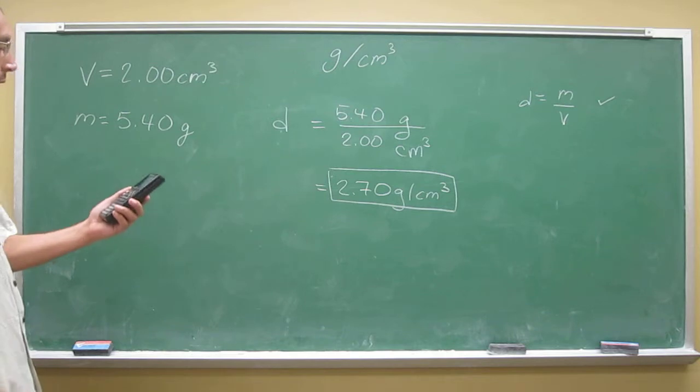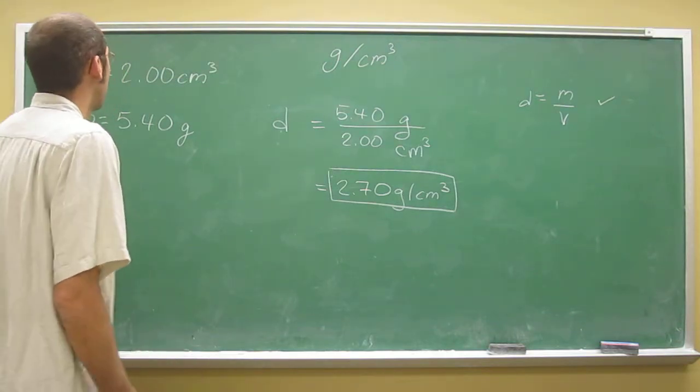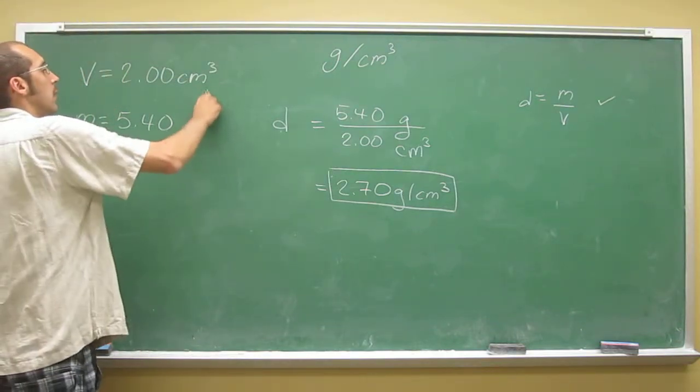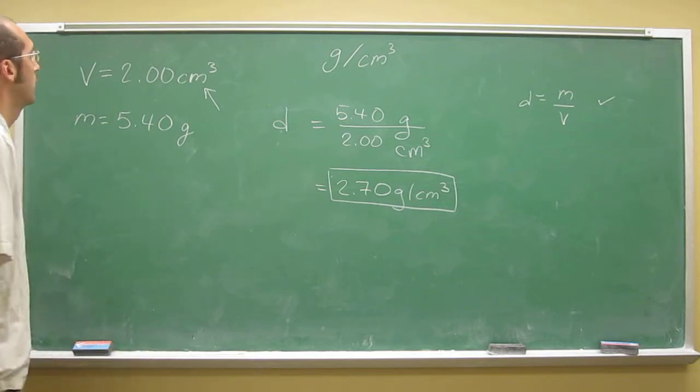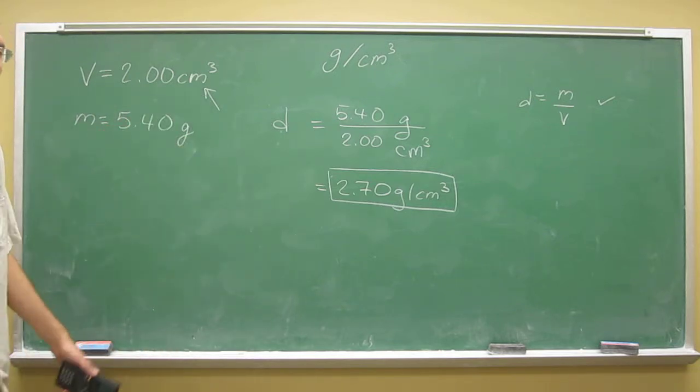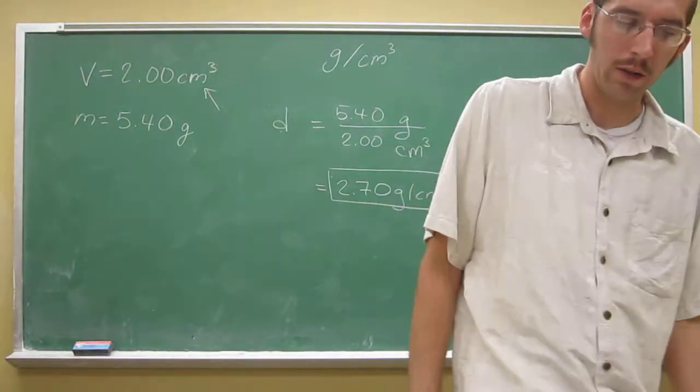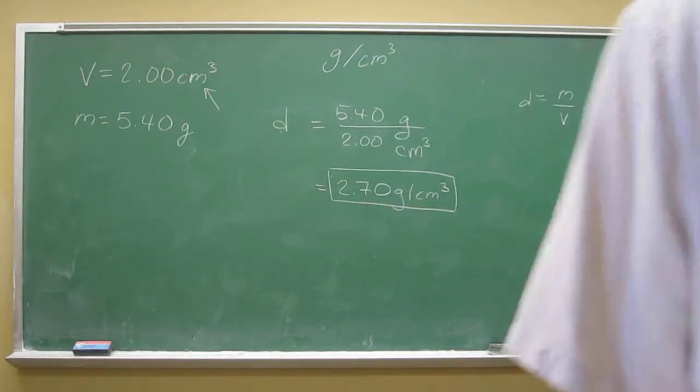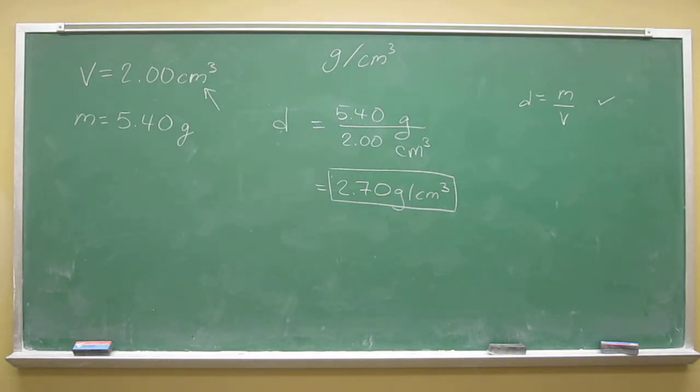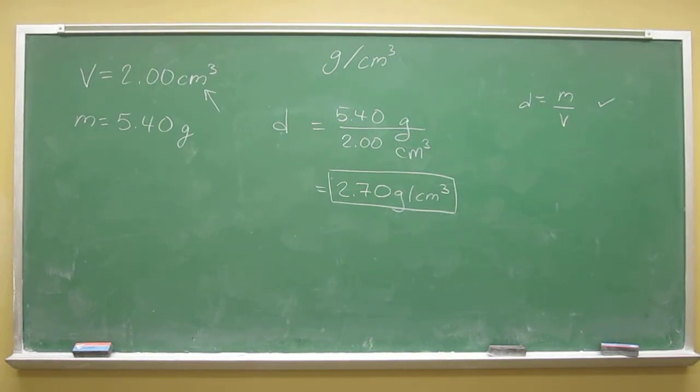That's how to find the density of a solid. Remember, solids are often given in volumes of centimeters cubed or meters cubed because it's easier to measure that than milliliters. We'll talk about gases and liquids next.